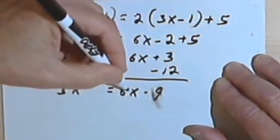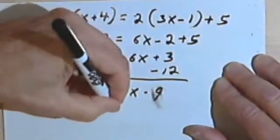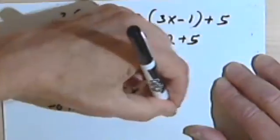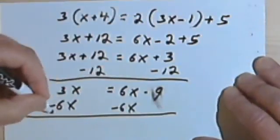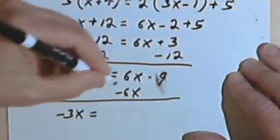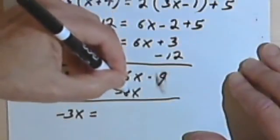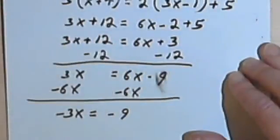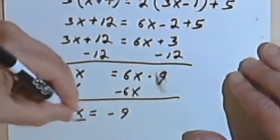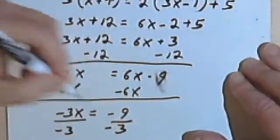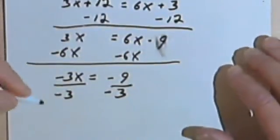I want to get rid of the 6x that's also on the right side. So I'll subtract 6x, subtract 6x. 3x minus 6x is negative 3x. The 6x and the negative 6x on the right side will cancel, and I'll just get a negative 9. And now all I have to do is divide by negative 3 on both sides, and I should get my answer.